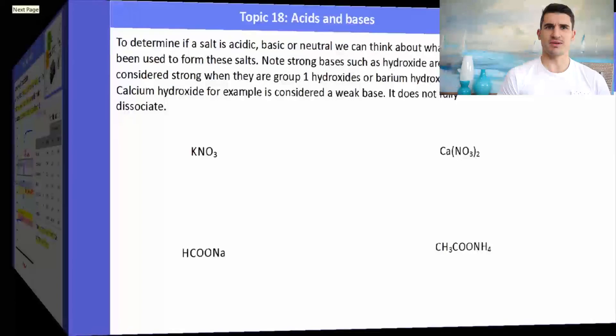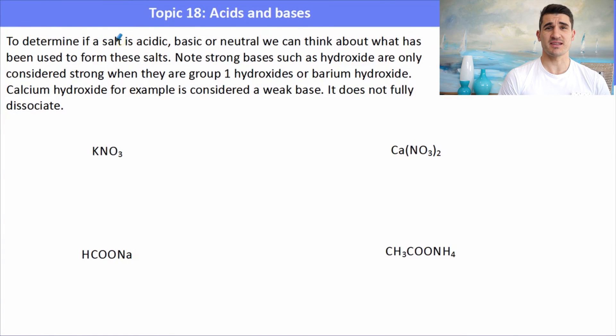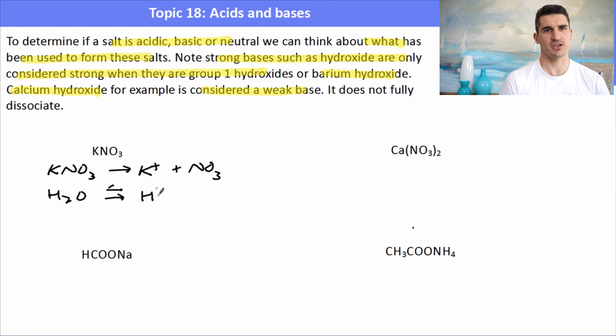The final thing for this volume is to determine whether or not a salt is acidic, basic, or neutral, based upon its reaction with water. An important concept here is that group one hydroxides are said to be strong bases, except for calcium hydroxide. Calcium hydroxide is considered a weak base because it doesn't fully dissociate. The way we do that, if we're given a salt, is we pretend that we add it to water and it dissociates, and then we write the equation for water self-ionizing as well. Here we have KNO3 ionizing to K plus and NO3 minus, and we also have water ionizing to H plus and OH minus.